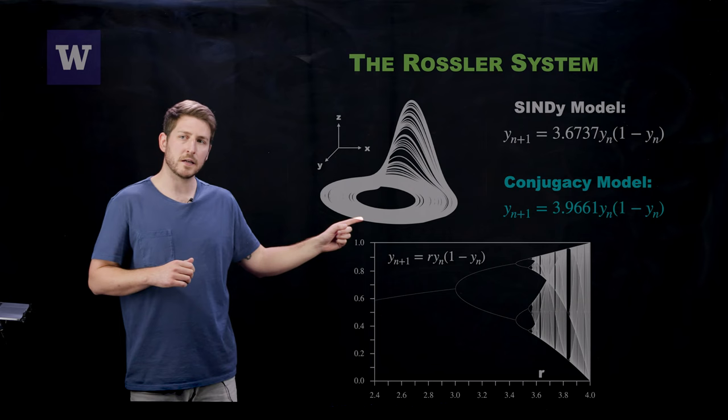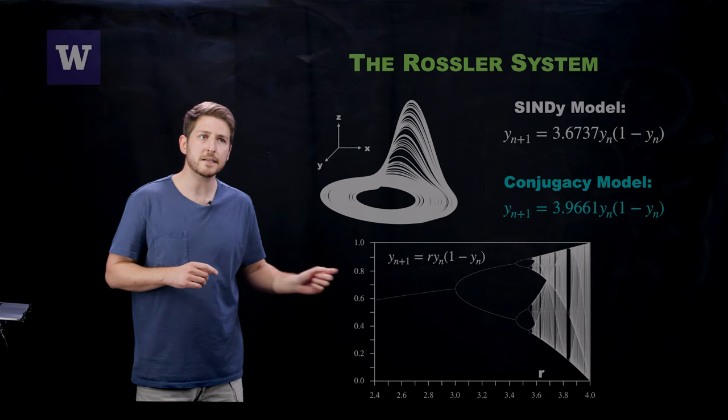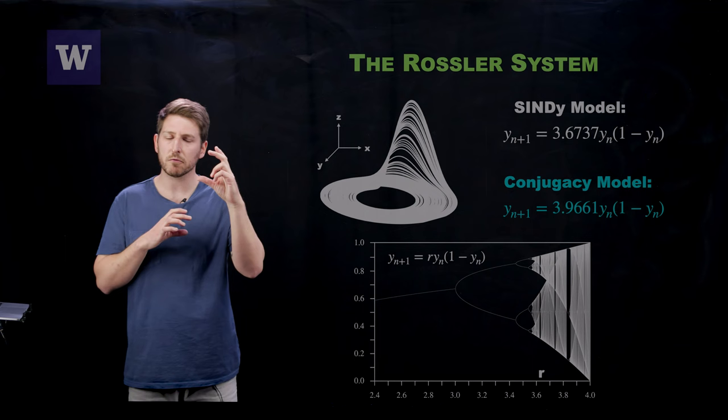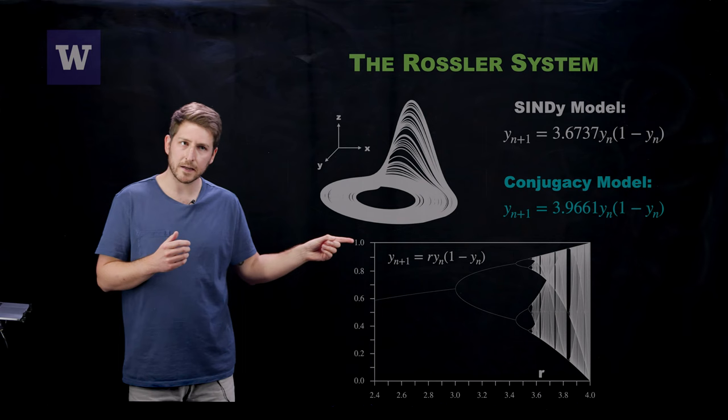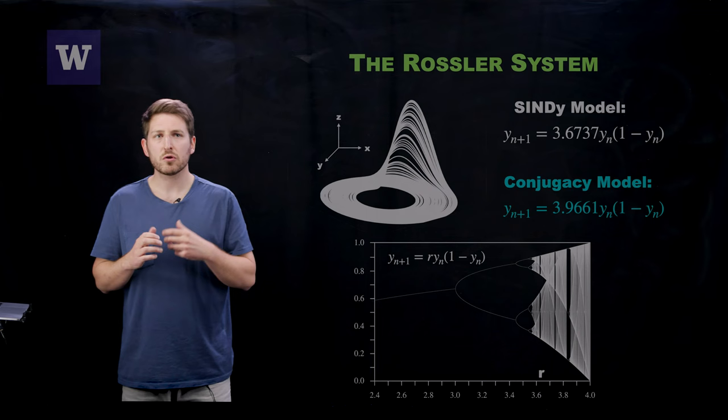Now, if you look at where each of these respective models is along this bifurcation diagram, what you can see is that the SINDy model puts you in a region where the chaotic attractor is two disjoint regions and the chaos hasn't fully developed yet. Whereas the conjugacy model is putting us far to the end of this period doubling cascade, cementing us well into the chaotic regime.